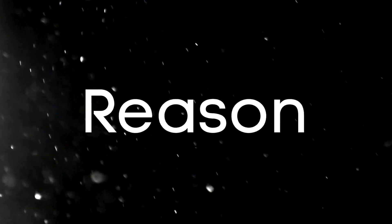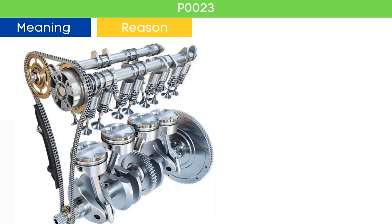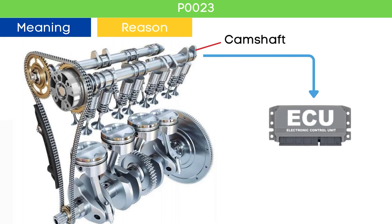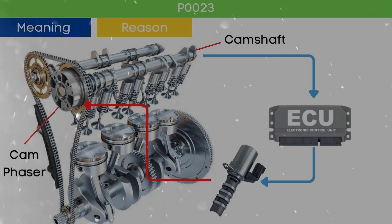Now let's learn why P1023 was triggered. The camshaft position sensor measures the position of the camshaft and sends this signal to the ECU. The ECU then sends a pulse command to the variable valve timing, VVT, solenoid to advance or delay the cam position based on engine load and speed. The VVT solenoid adjusts the cam phaser accordingly.